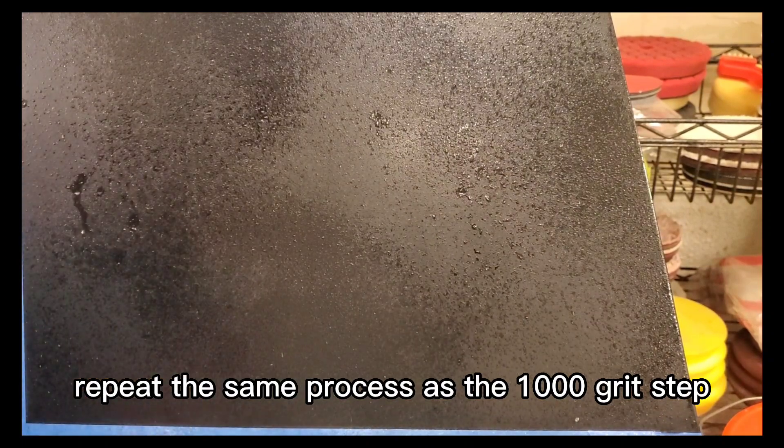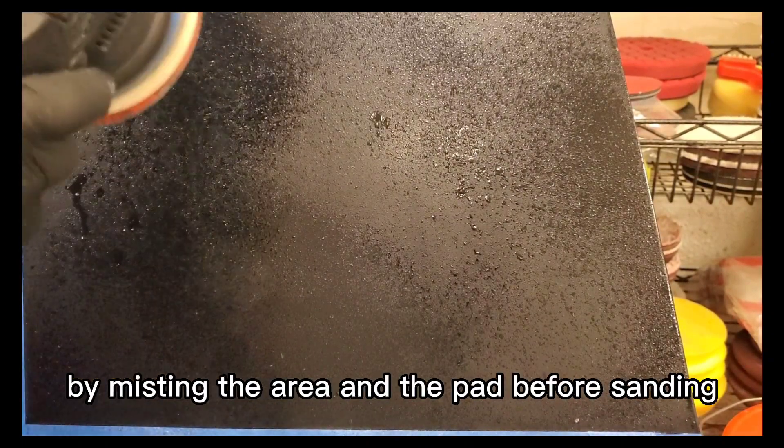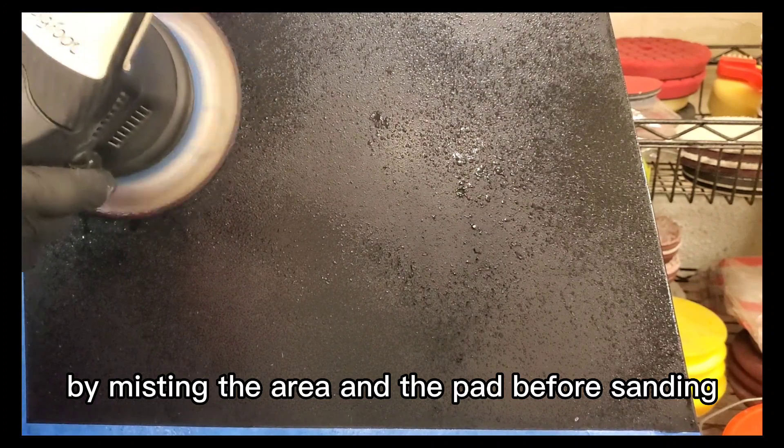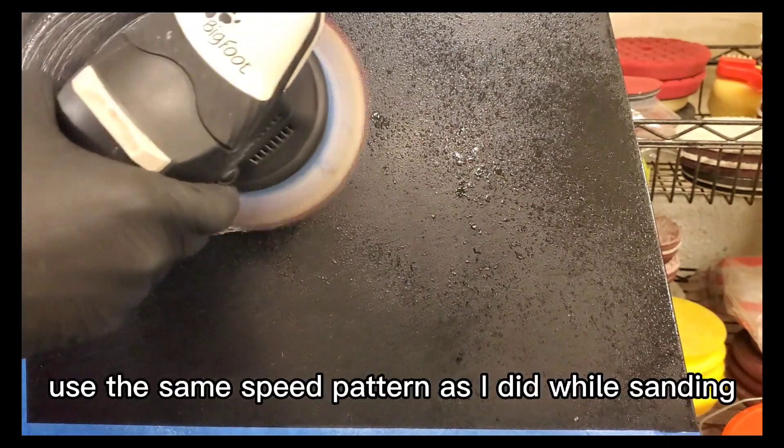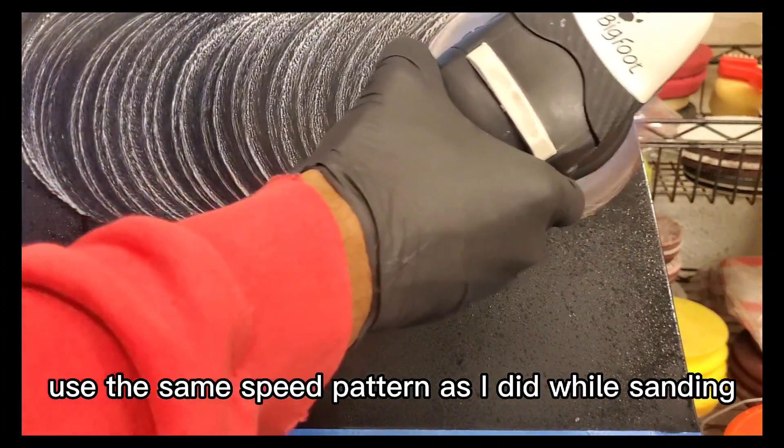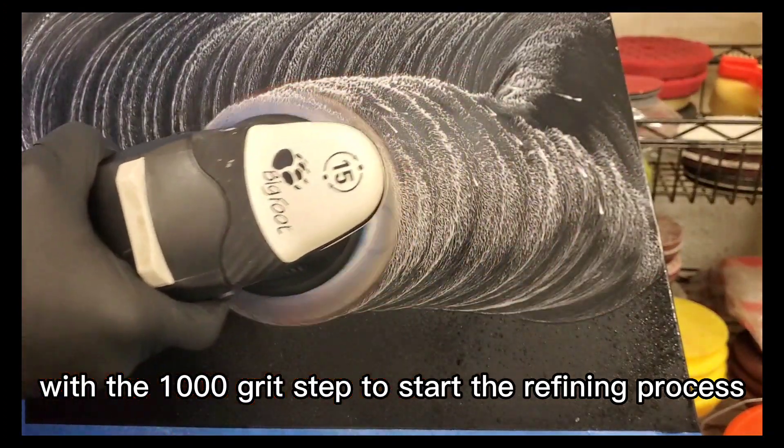Repeat the same process as the 1000 grit step by misting the area and the pad before sanding. Use the same speed pattern as I did while sanding with the 1000 grit step to start the refining process.